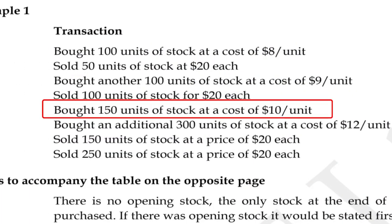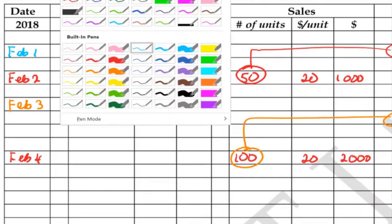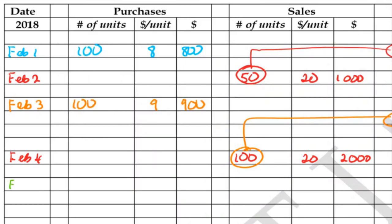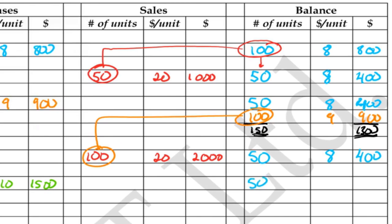On February 5th, we bought 150 units at a cost of $10, giving a total purchase value of $1,500. Now we have two batches: the blue batch of 50 at $8 giving $400, and the new green batch of 150 at $10 giving $1,500. Total: 200 units, total value $1,900.